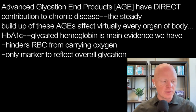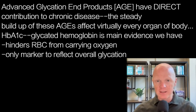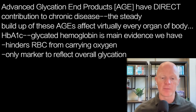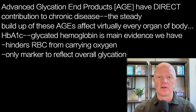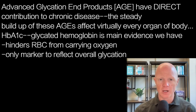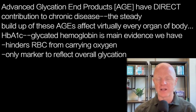The only measurement we have to get an idea of glycation is HbA1c — glycated hemoglobin is the marker. That is when the glycation has occurred at the hemoglobin, not only compromising the red blood cells' ability to carry oxygen, its most famous job, but it also becomes the only marker that reflects overall glycation.